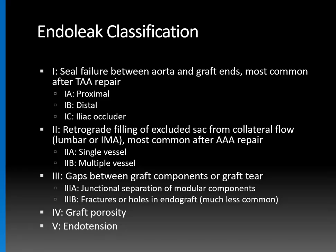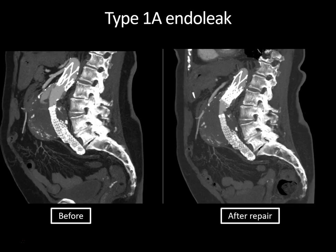Just remember that a type 1 endoleak is when you have seal failure between the aorta and the graft ends, and that's most common after a thoracic aortic aneurysm repair, but we still see it in the abdominal aortic region. Type 1a is if it's proximal above, and type 1b is if it's distal or below. With ovation endografts, sometimes you do see a type 1a endoleak that can spontaneously resolve. But in this case, this was a prominent endoleak and the sac was increasing in size, so it was repaired by placing an aortic cuff in the proximal portion of the aortic stent graft, and the type 1a endoleak resolved on the post-repair images.